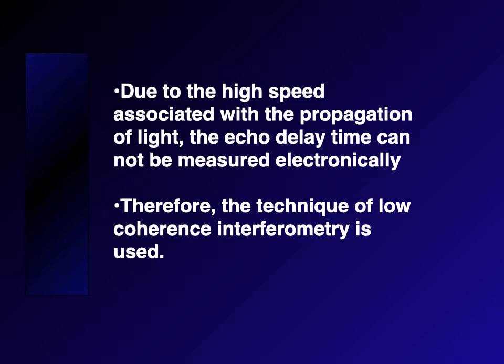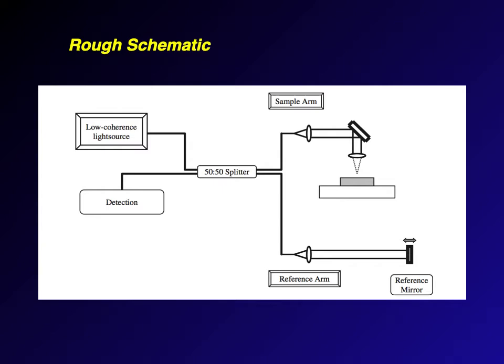Due to the high speed associated with the propagation of light, the echo delay time cannot be measured electronically. Therefore, the technique of low-coherence interferometry is used — that is actually the real name for OCT. In low-coherence interferometry, because you can't measure the time something goes and comes back like with ultrasound — light moves too fast — you use a reference arm. The physics of this is discussed in the lecture on axial resolution.